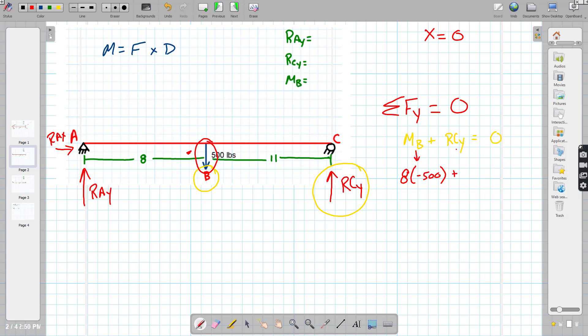So plus R-C-Y. That is going to be the total. So we're going to say eight plus 11, so we get 19. And we don't know the value of R-C-Y, so we'll put it in here. Equals zero. So I'm going to say this is what? Negative 4,000 plus 19 R-C-Y equals zero.